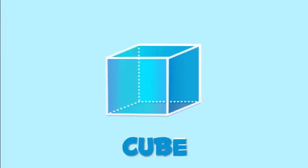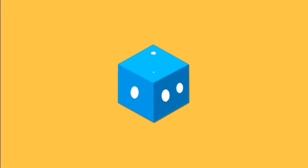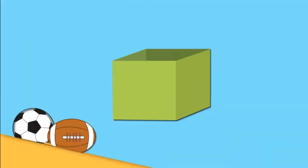And this is a cube. Cubes have four identical square sides. Dice are cubes. And this box is also a cube.